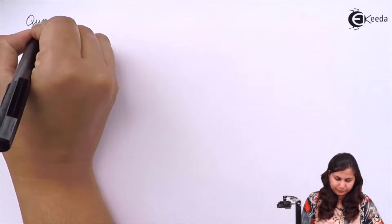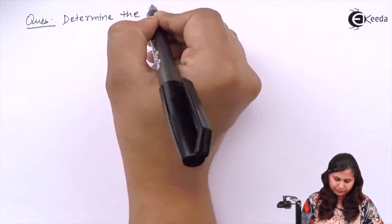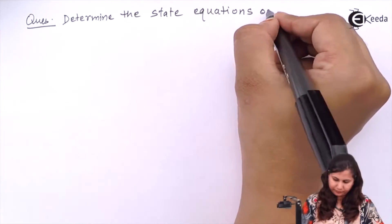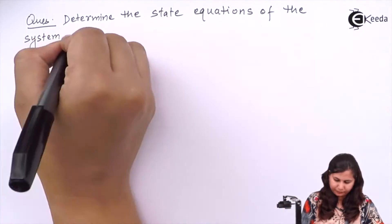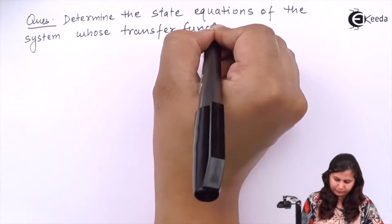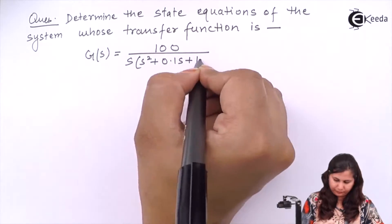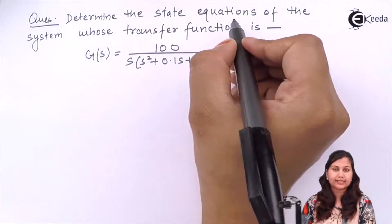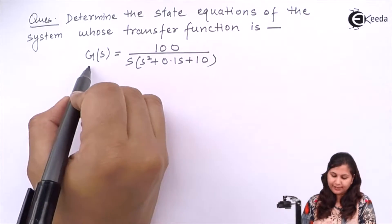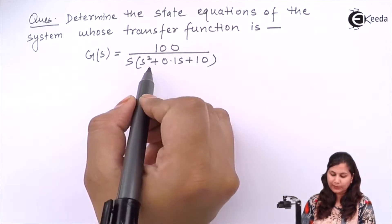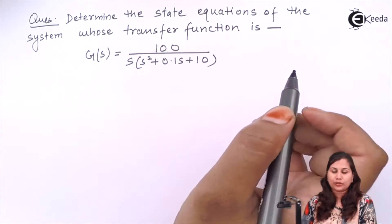Hello friends. In this video we are going to solve a problem on how to obtain the state space representation of a system whose transfer function is given to us. So let's take a problem. Our problem is to determine the state equations of the system whose transfer function is G(s) = 200 / (s(s² + 0.1s + 10)). So let's solve this problem.